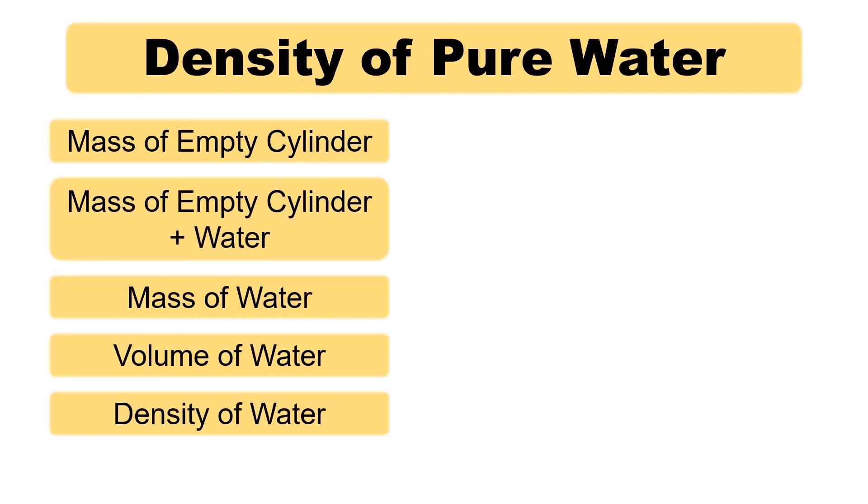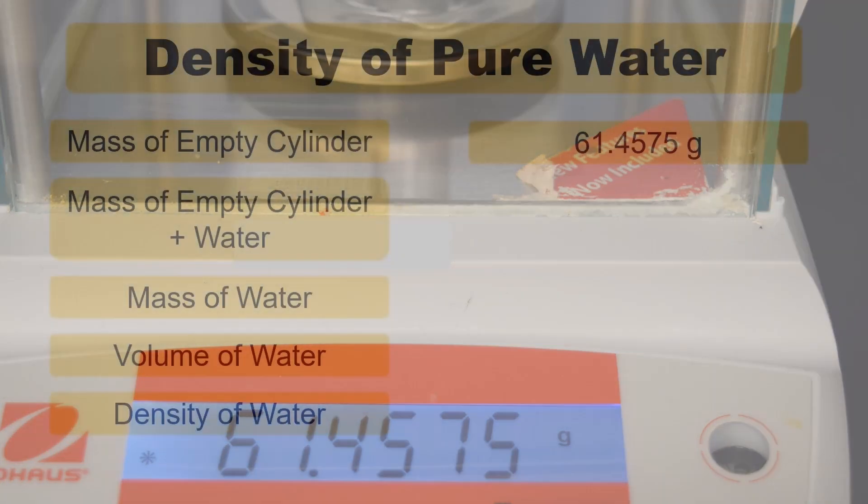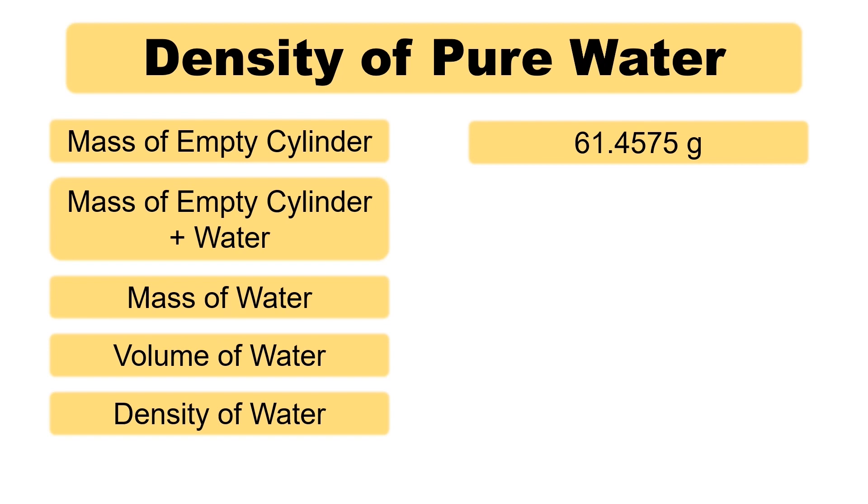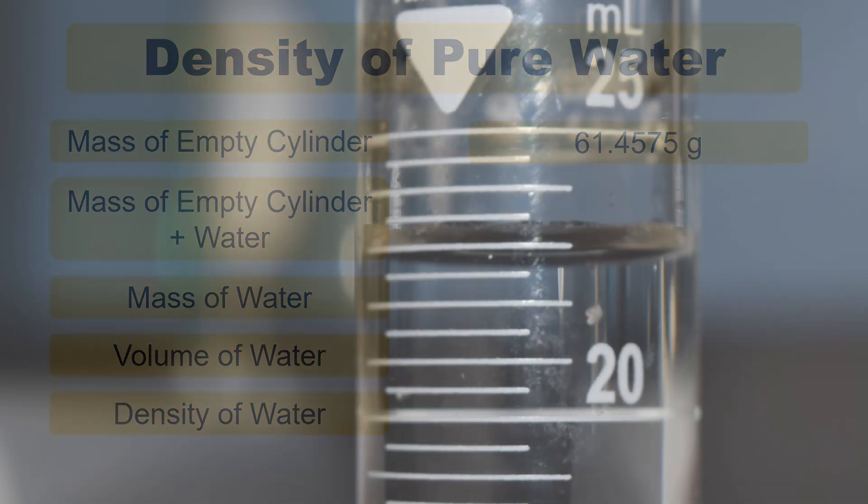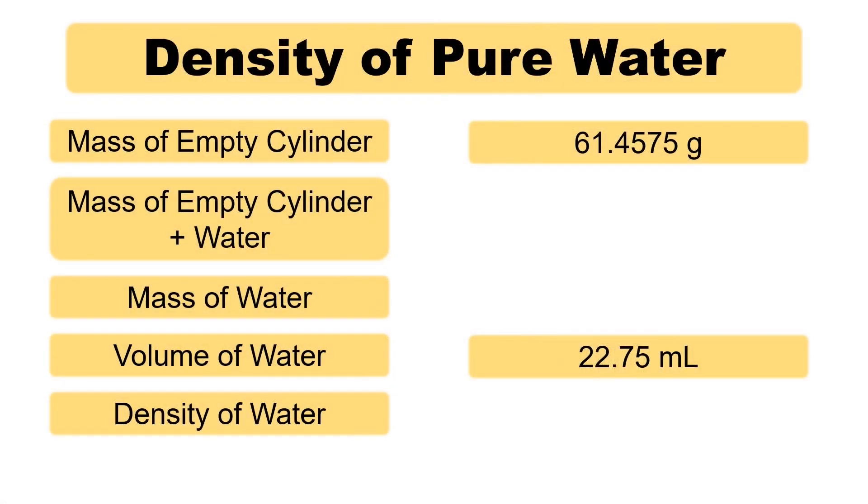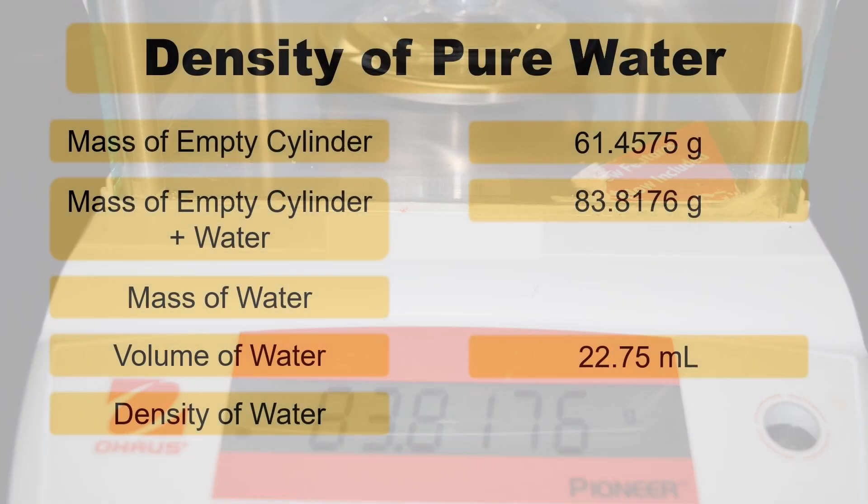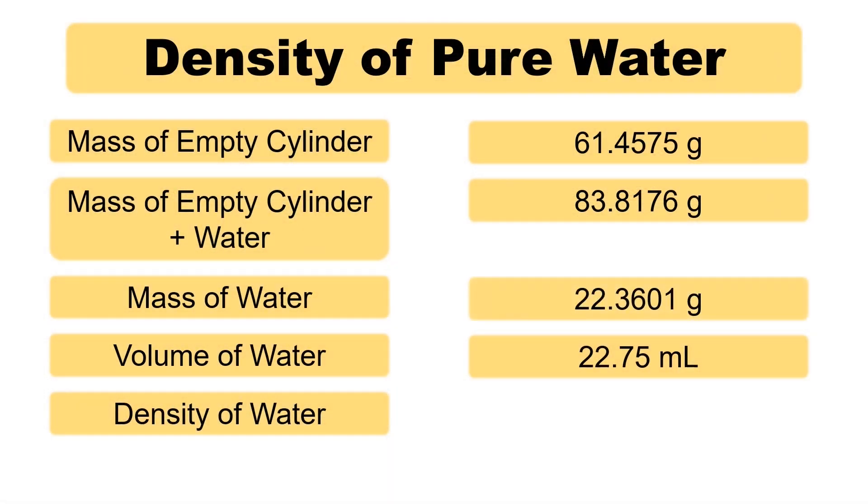Interestingly, we'll repeat the procedure from the prior lab, the uses of volumetric glassware. By subtracting the mass of the cylinder, we can obtain the mass of the water. Simply divide by the observed volume of water to obtain the density.